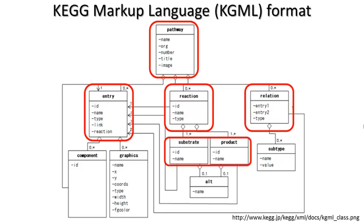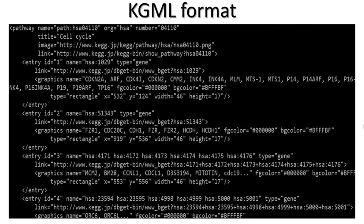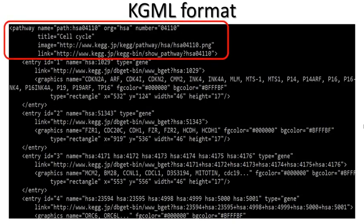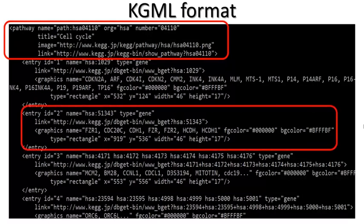In order to generate the nice graphical representation of a pathway that we had looked at earlier, one feature of each entry is the graphics, including the coordinates, logo shape, size, and color. The KGML format is stored in a computer like this. An example of an entry is shown here following the format of KGML.